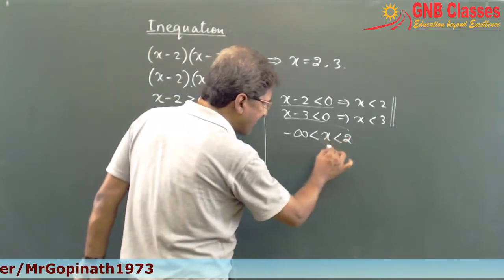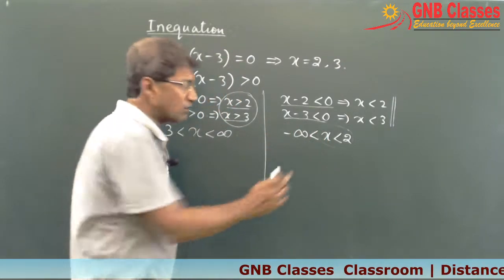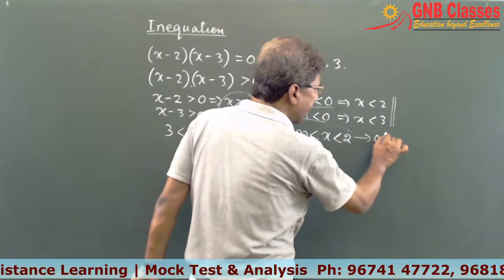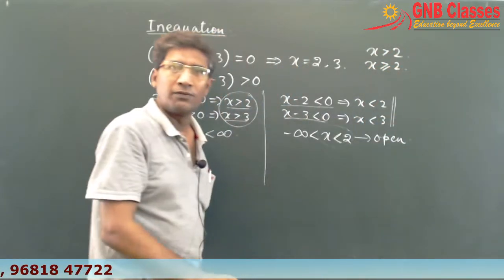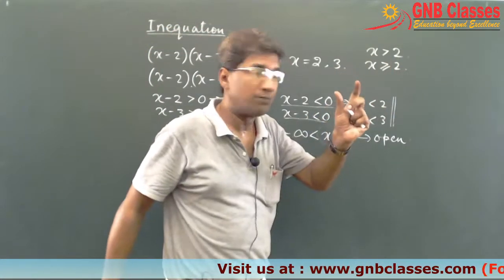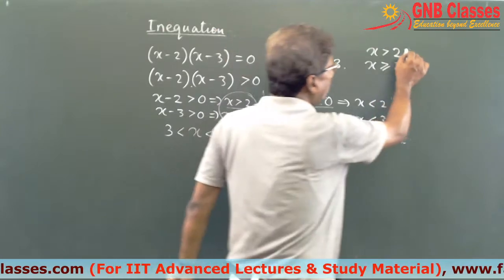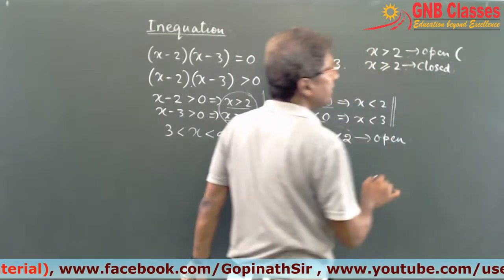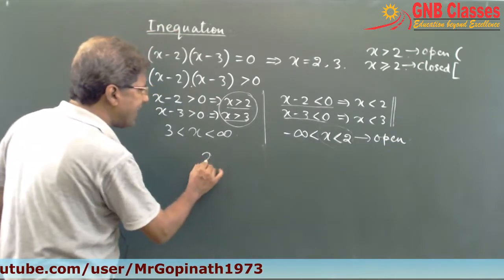Now, x is less than 2 means you are taking values less than 2, but you cannot take x equal to 2, because we said x is less than 2, not equals to 2. Whenever there is no equal sign, we call that part open. For example, x greater than 2 excludes the value 2 (open), while x greater than or equal to 2 includes the value 2 (closed). In mathematical notation, open is written with a round bracket and closed with a square bracket.